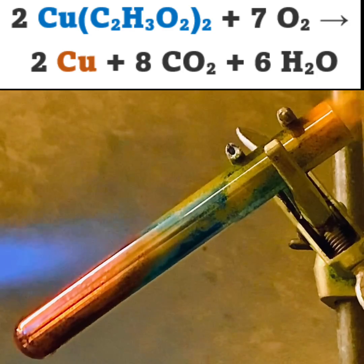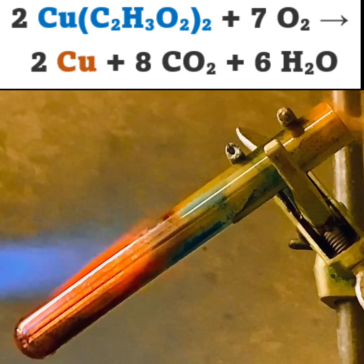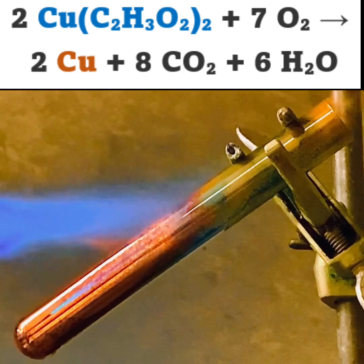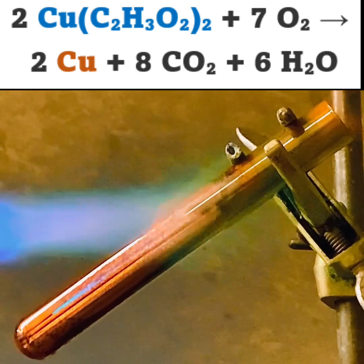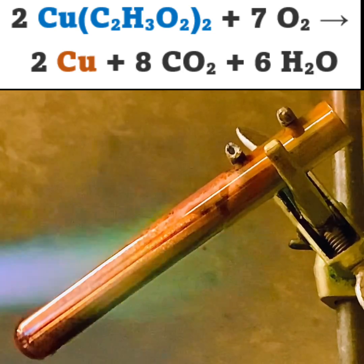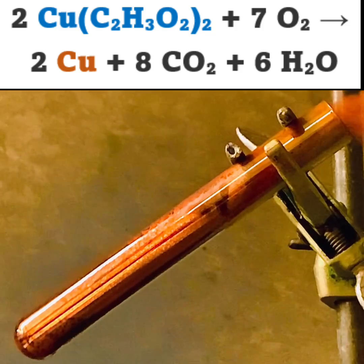The stuff that looks like brown smoke exiting the test tube is also likely tiny particles of copper metal. If you look closely, you'll also see that the flame turns green in some places. This effect is often observed when copper gets heated in a flame.